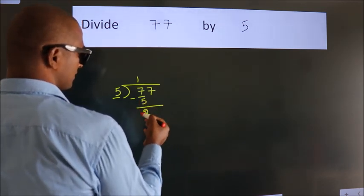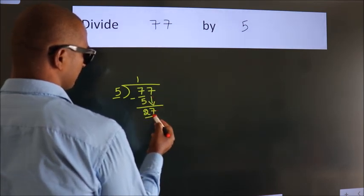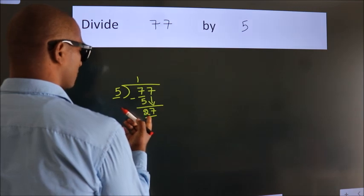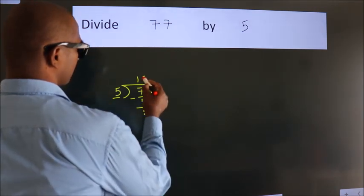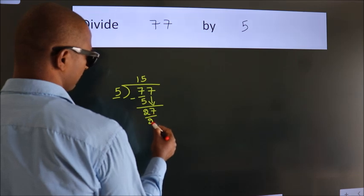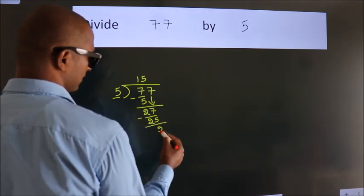After this, bring down the beside number. So 7 down, so 27. A number close to 27 in 5 table is 5 fives 25. Now we subtract. We get 2.